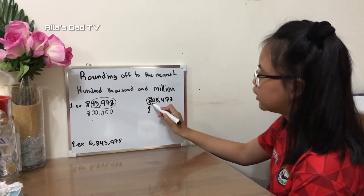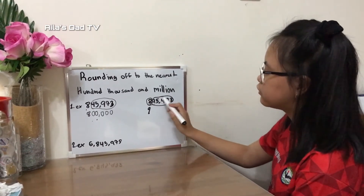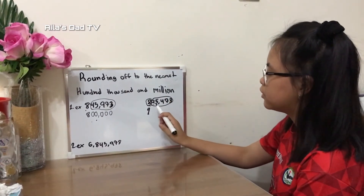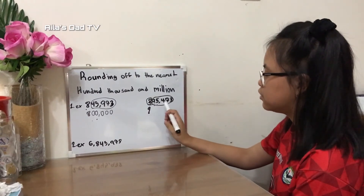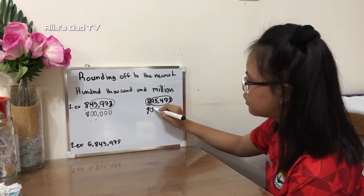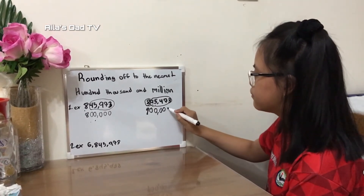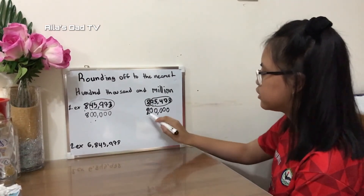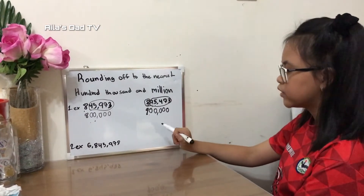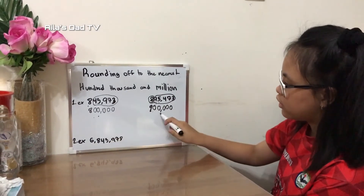The rest of the numbers will change to zero, just like in the previous example. So now it became nine hundred thousand. Notice the difference between the two answers.